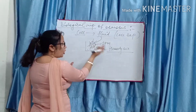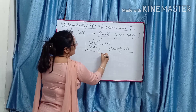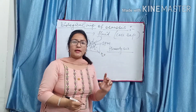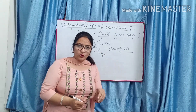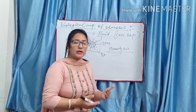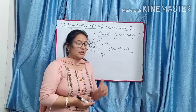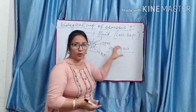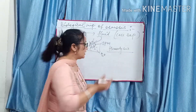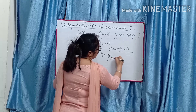Aur agar opposite karein - cell ko place karte hain in concentrated solution - then cell will shrink. Toh cell ki agar swelling ho rahi hai toh hemolysis. If the cell will shrink, then it is known as plasmolysis.